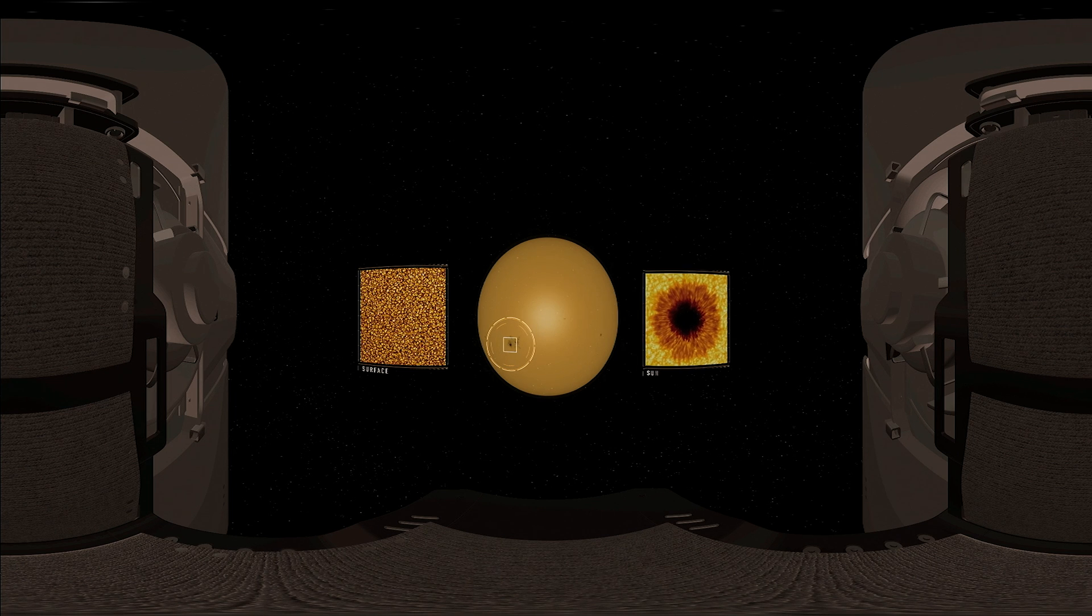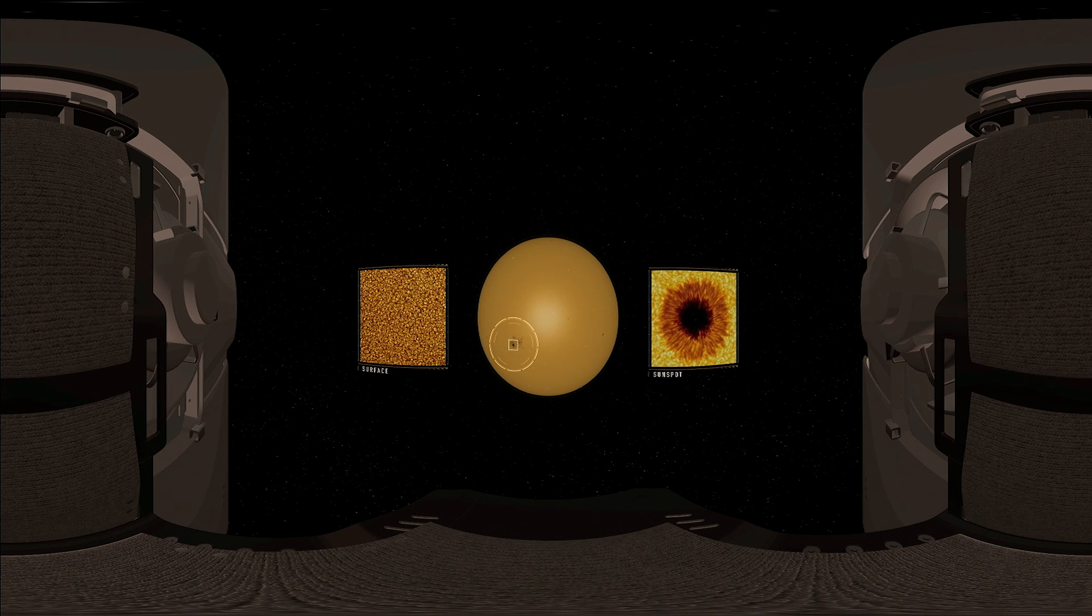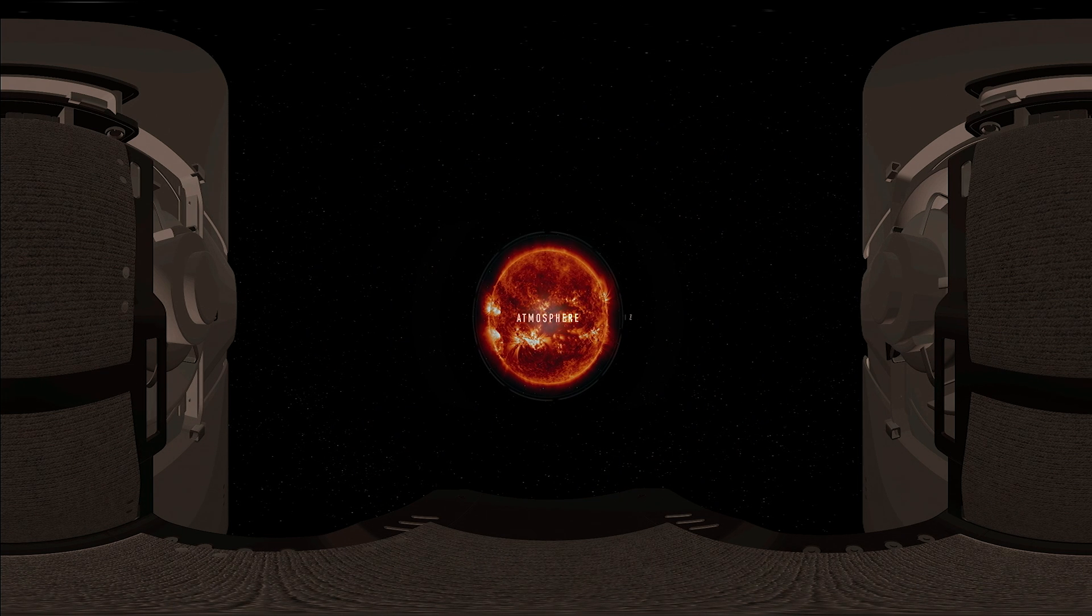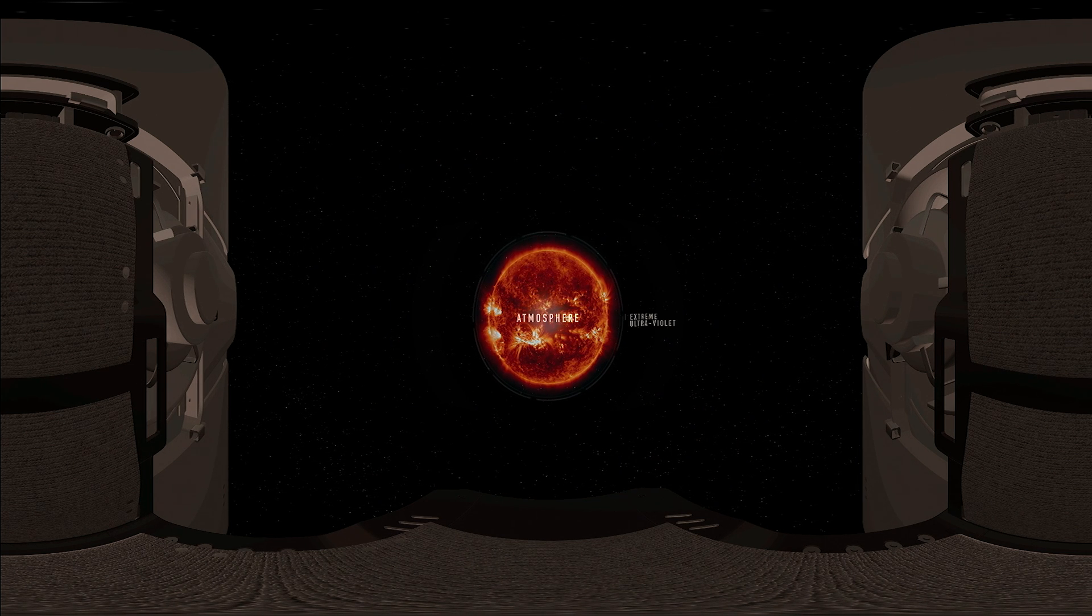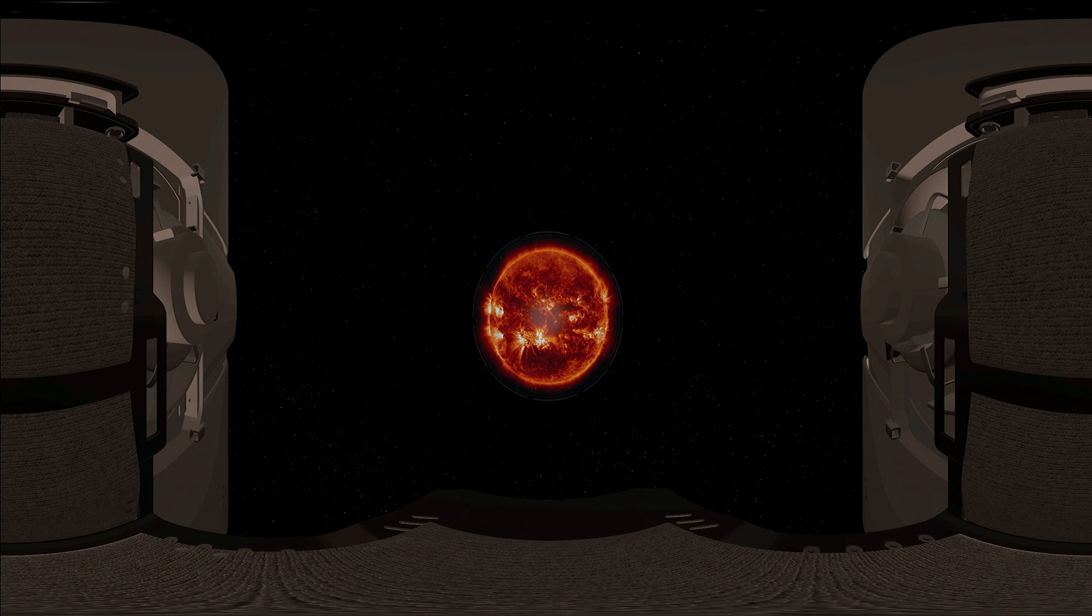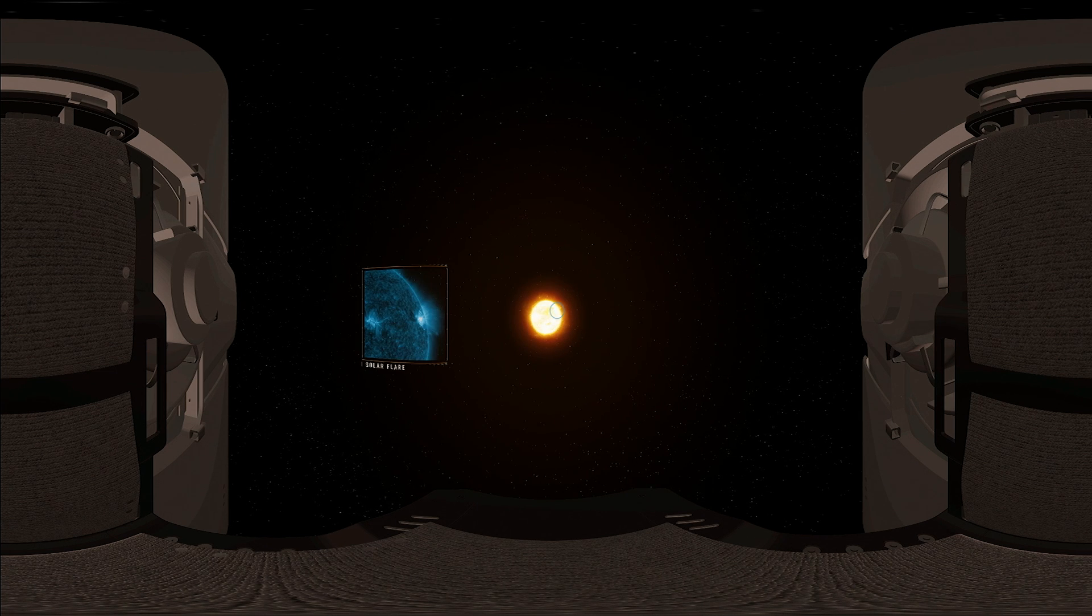This is a sunspot, a region of intense magnetic field generated from the inner layers of the Sun. The corona is the Sun's atmosphere. It is a turbulent world, where magnetic energy is stored and released during the most dramatic events in the solar system. Solar flares.